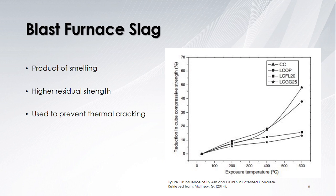Blast furnace slag is made when iron ore and limestone are put into a furnace and heated together to chemically combine. Both molten iron and non-metallic blast furnace slag are formed in the process. The slag is cooled and ground into powder for concrete mixing. Blast furnace slag retains compressive strength at elevated temperatures. The graph compares the reduction in compressive strength at temperatures up to 600 degrees Celsius. The blast furnace slag is the LCGG25 plot and the reduction was less than 15%, while the normal concrete CC on the graph had an almost 50% reduction in compressive strength.